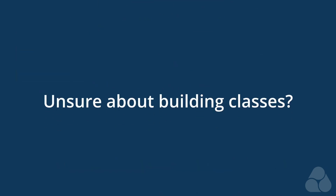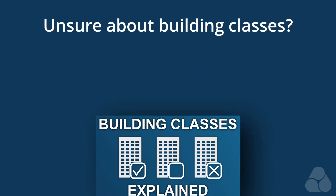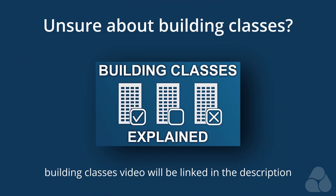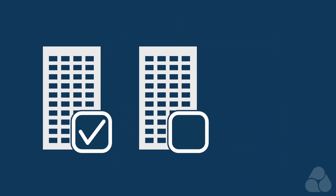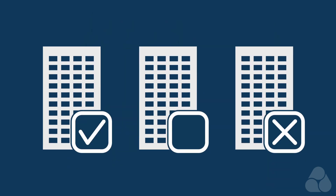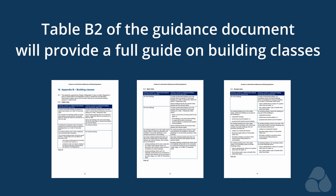If you're unsure about your building class, we have a video dedicated to explaining the three building classes — Viable, Open, and Exempt — which will be linked in the description of this video. A full guide to building classes can also be found in Table B2 of the Heat Network's Metering and Billing Guidance document, which will also be linked in the description.